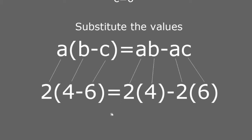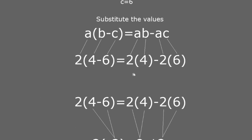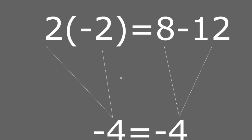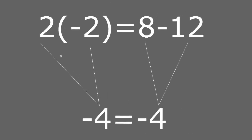Here we see the substitution of values. Everything is the same, but we have a minus sign on both sides of the equation. Now, 4 minus 6 becomes negative 2 — in the previous example this was positive 10. Now we have 2 multiplied by negative 2, and instead of 8 plus 12 we have 8 minus 12. The end result is the same: 2 multiplied by negative 2 is negative 4, and 8 minus 12 is also negative 4.